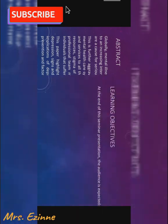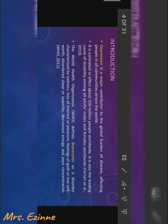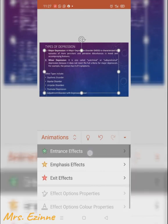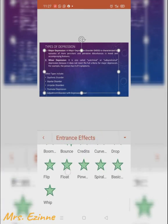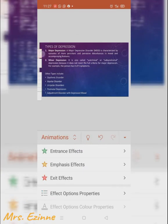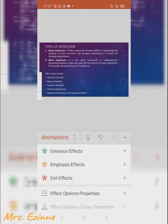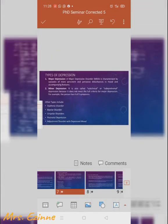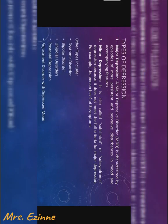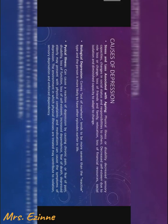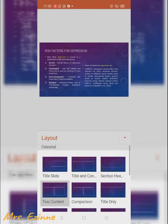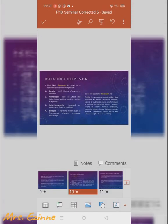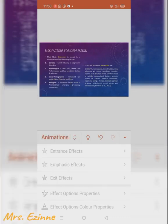Don't forget to subscribe to this channel if you like this video and want to see more tutorials. I've chosen the floating option — I want the major and minor depression text to remain on the slide as it comes in, and I want the other words to come in later. You can see how I chose the animation using the entrance effect.